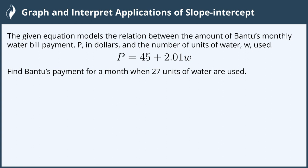The given equation models the relationship between the amount of Bantu's monthly water bill payment, P, in dollars, and the number of units of water, W, used. P equals 45 plus 2.01W. Find Bantu's payment for a month when 27 units of water are used.